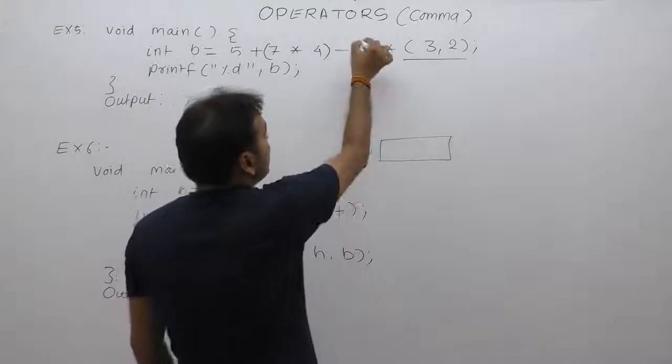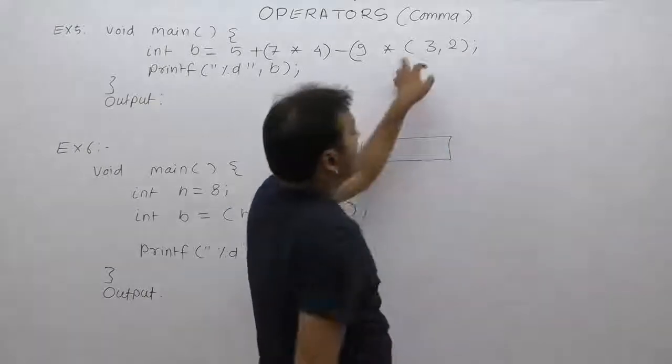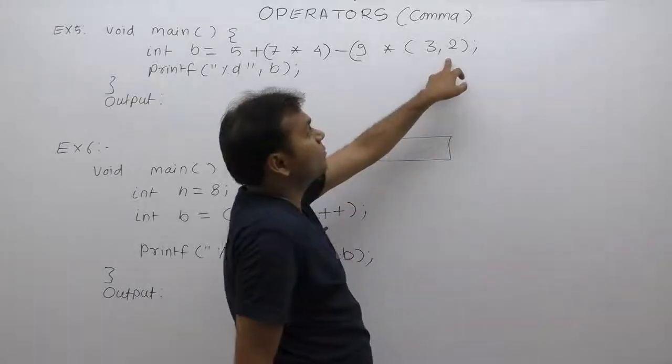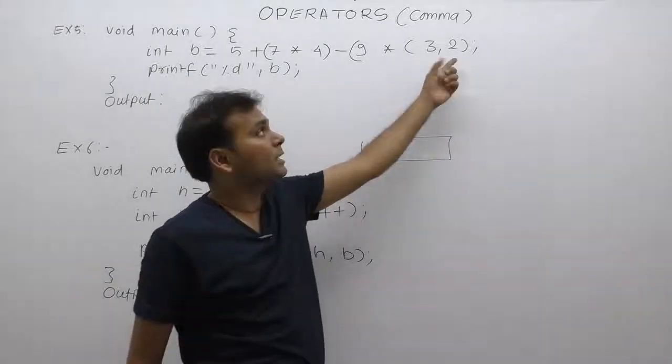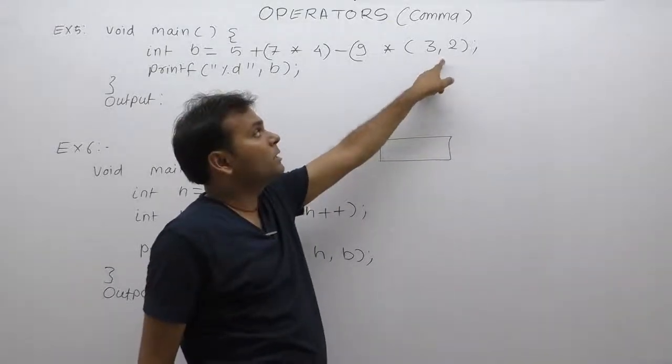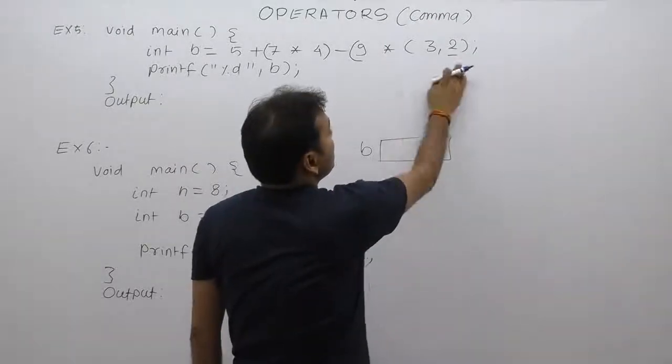Next one, second multiply: first operand is nine, second operand is this one. In case of comma-separated expressions which are separated in the form of brackets, brackets go from left to right. So we can replace the value of the last one.